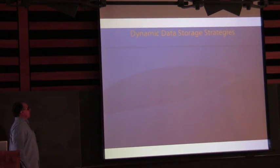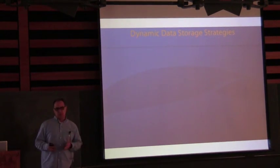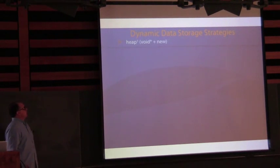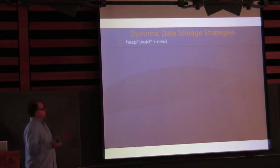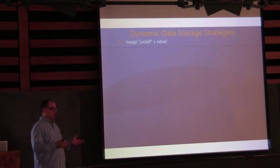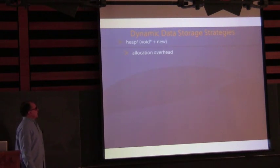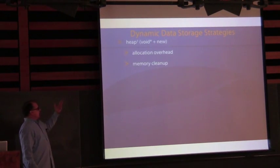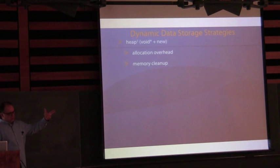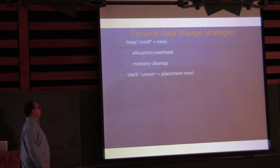First and obvious is on the heap. You have a void pointer, you do new, and that void pointer points to something. Then it's up to you to figure out at runtime what that something is. You will suffer allocation overhead — you have to allocate memory on the heap and later delete that memory.